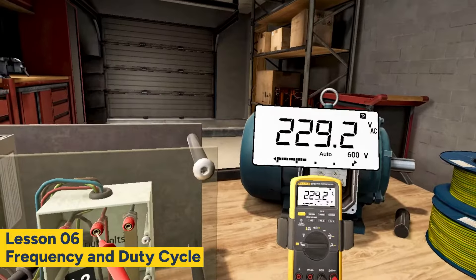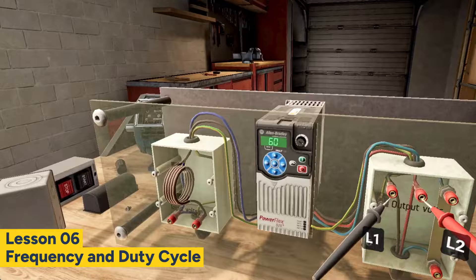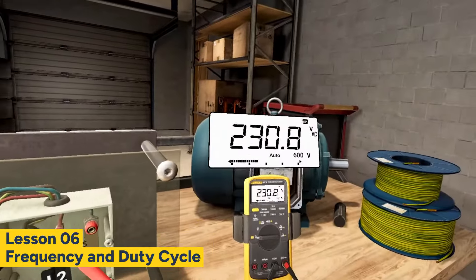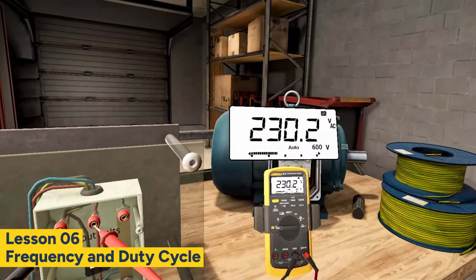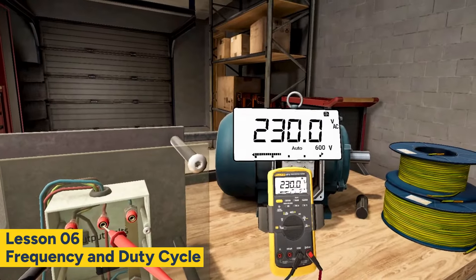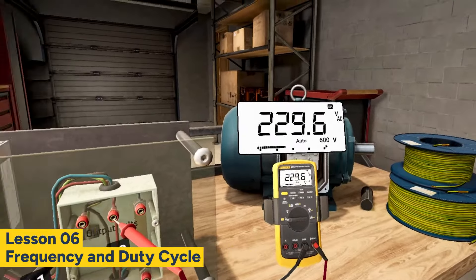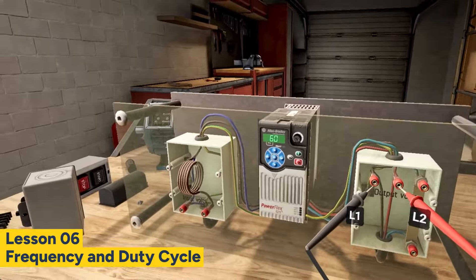Now let's discuss the frequency measurement function. Circuits and equipment may be designed to operate at a fixed or variable frequency. They may perform abnormally if operated at a different frequency than specified. For example, an AC motor designed to operate at 60 hertz operates slower if the frequency is less than 60 hertz, or faster if the frequency exceeds 60 hertz.